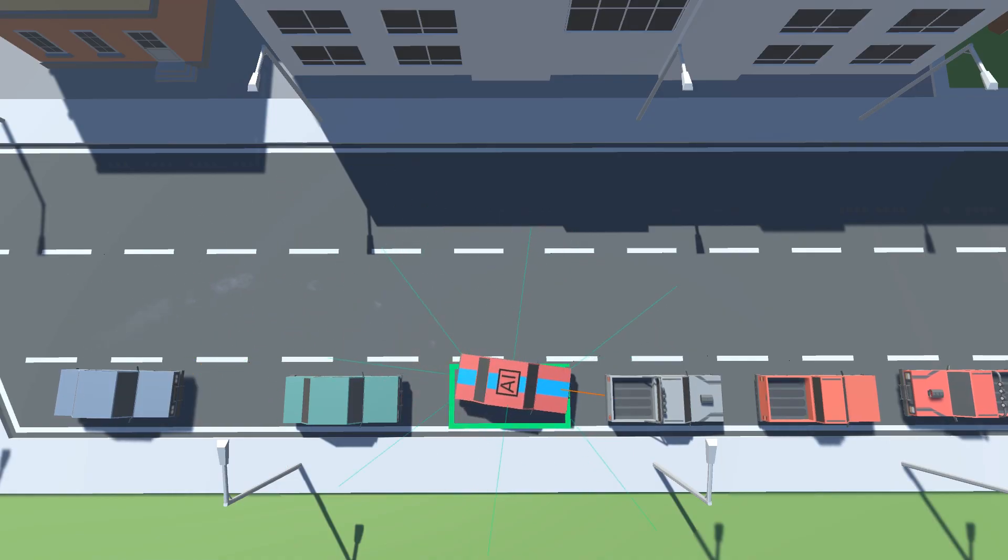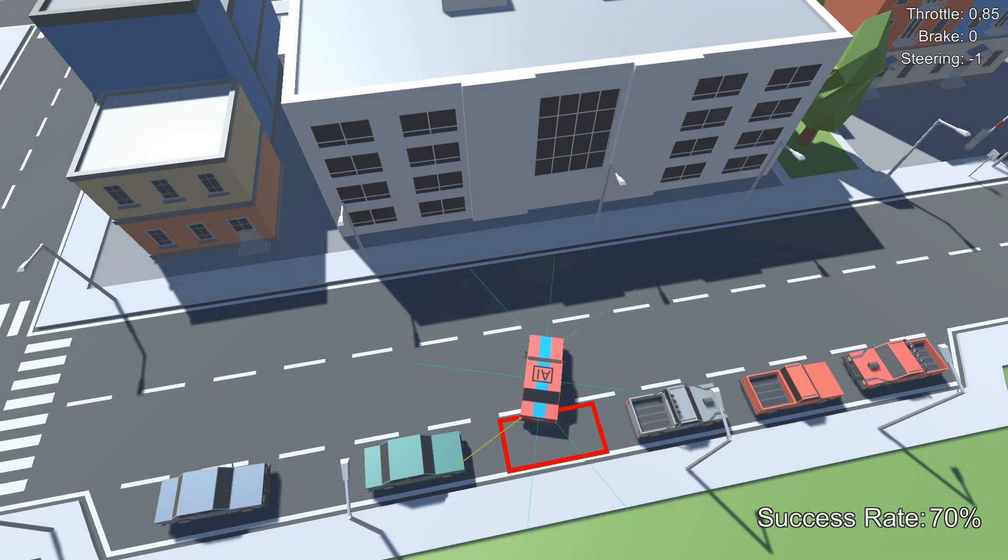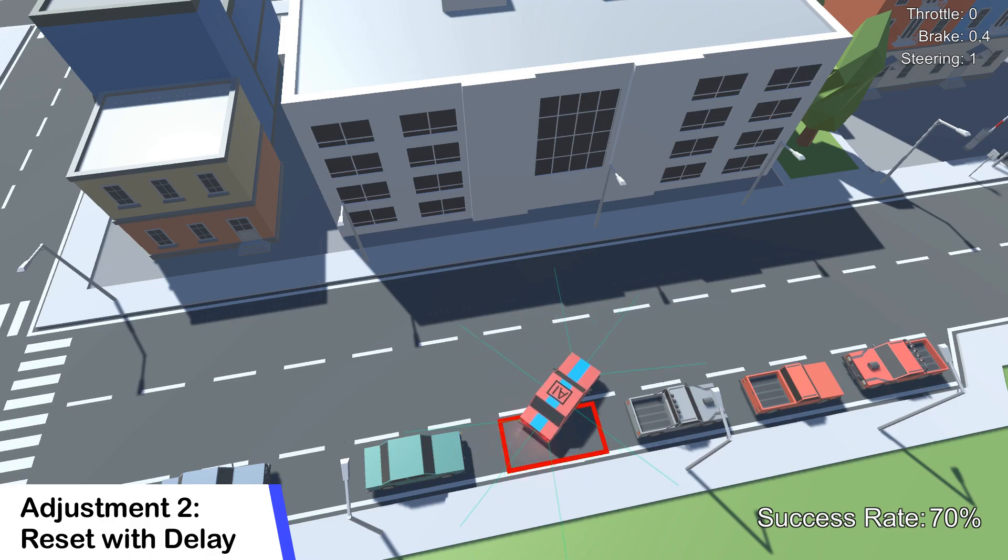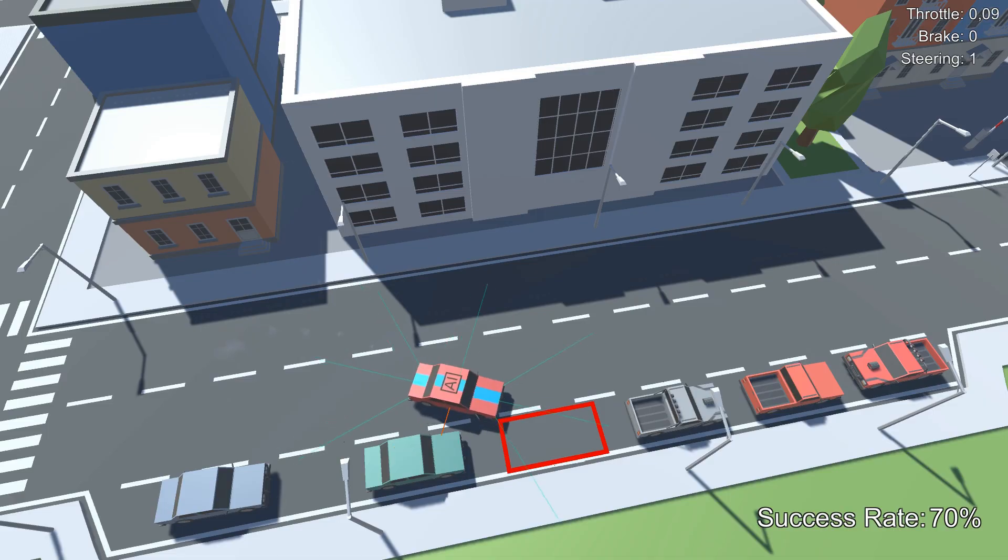So I then decided to give it a bit more time in order to be able to adjust its position before actually resetting the environment. Now the agent has to actually stop for 1.5 seconds before the environment is reset. This led to a dramatic decrease in success rate because this new behavior of having to stop at the parking space is something that the agent has to actually learn first. But it also led to some quite interesting behaviors like this one. I mean I really wouldn't recommend parking like that in real life.